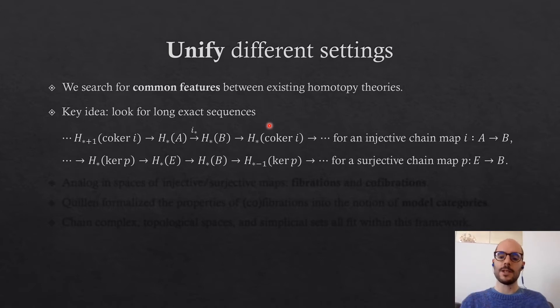And dually, if we have a surjective map from E to B, then we have a long exact sequence that relates the homology of E, the homology of B, and the homology of the kernel.